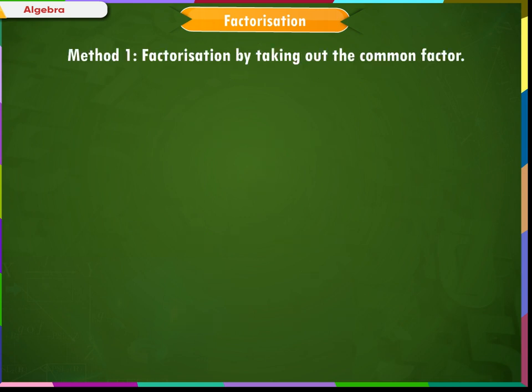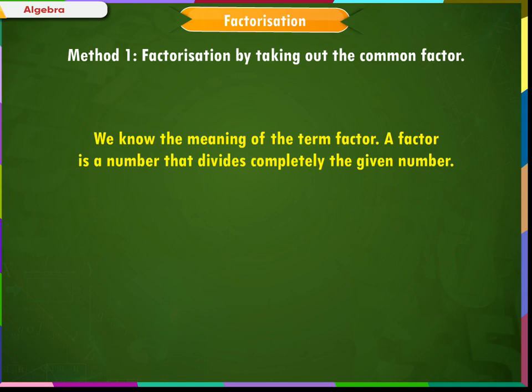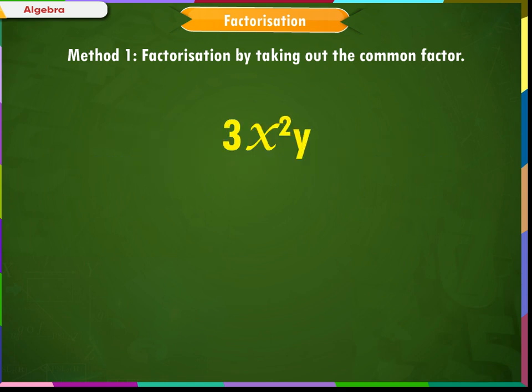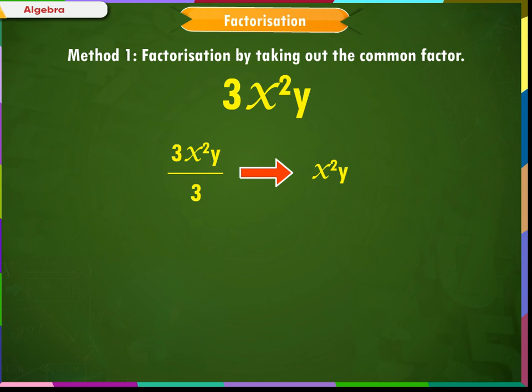Method 1: Factorization by taking out the common factor. We know the meaning of the term factor. A factor is a number that divides completely the given number. For example, 3x²y is a number. If we divide this number by 3, we get x²y.